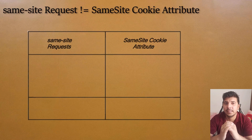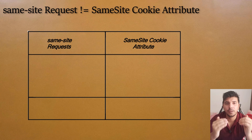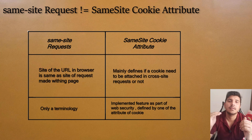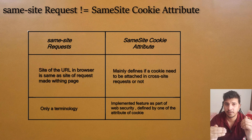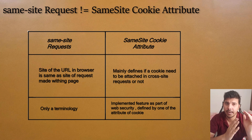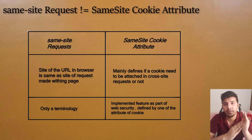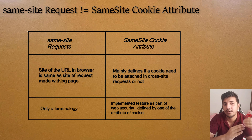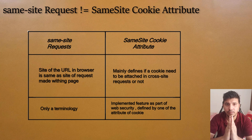When I say SameSite cookie attribute, don't confuse it with the same-site request. A same-site request means the site of the URL and the site of the request are the same. But the SameSite cookie attribute is a completely different topic — it defines whether a cookie should be attached to a cross-site request or not. These are completely different terminologies.